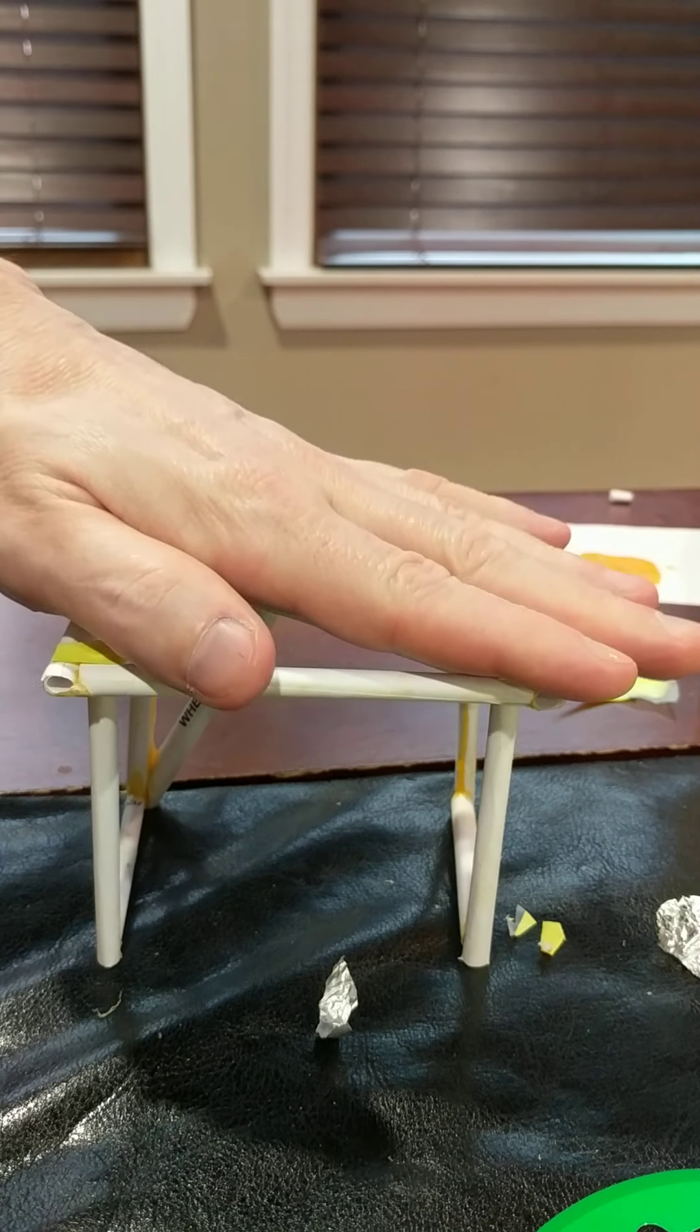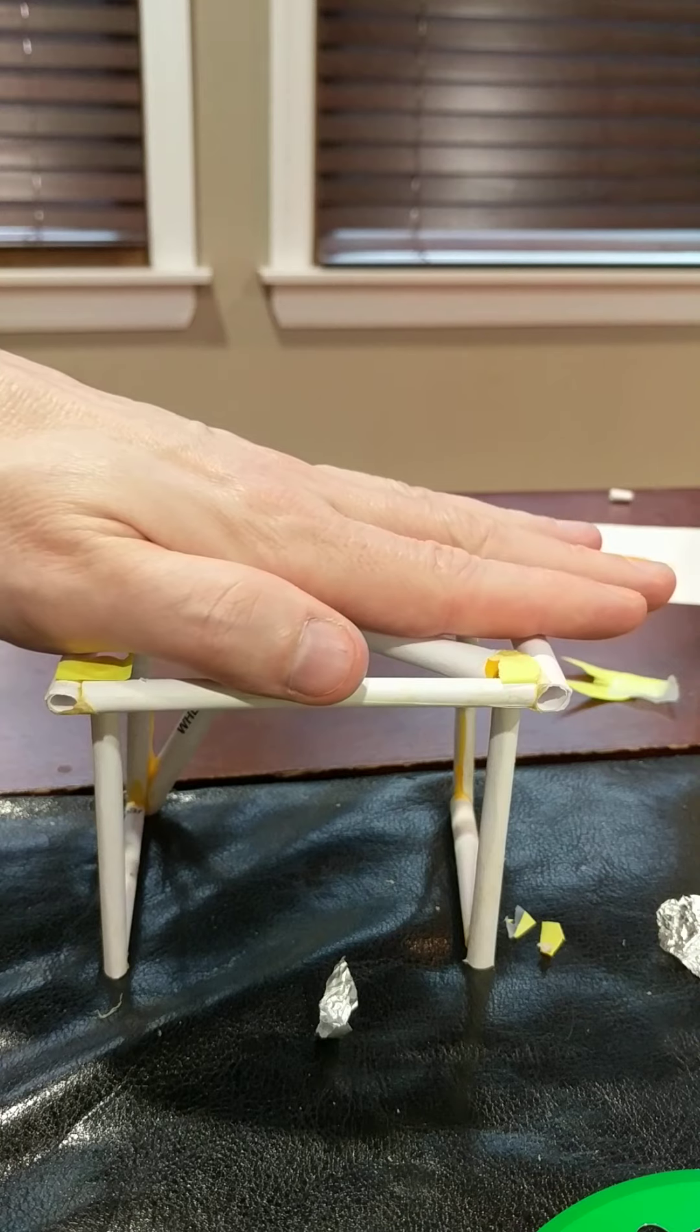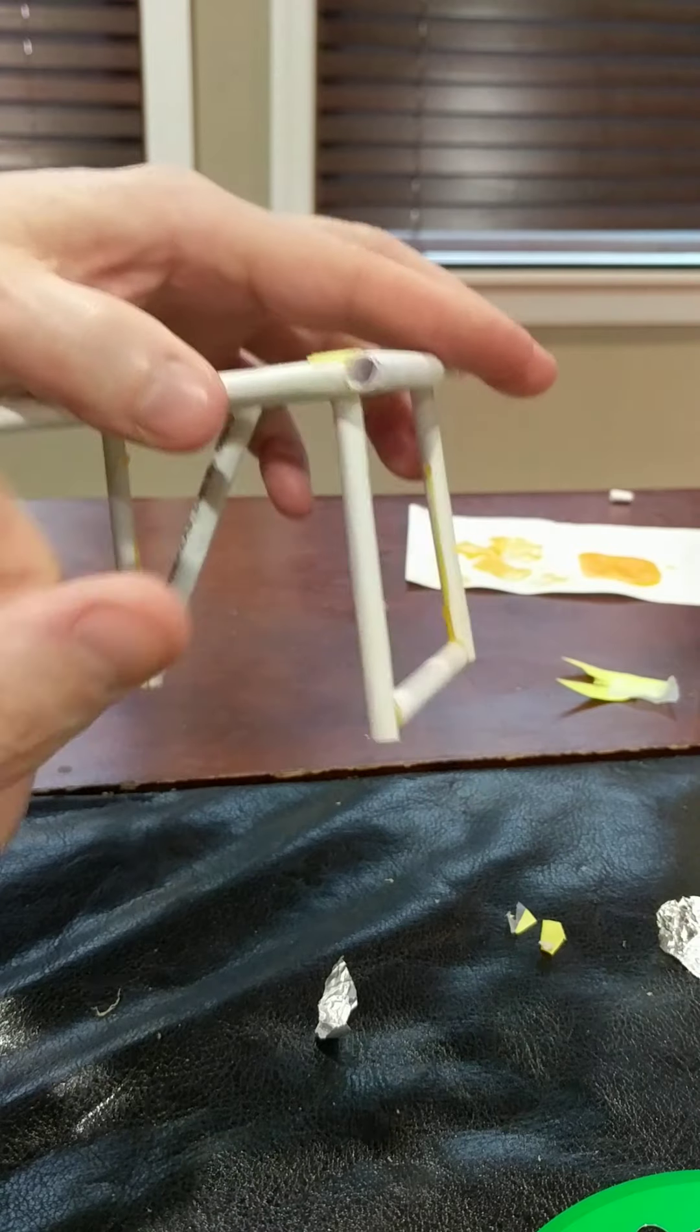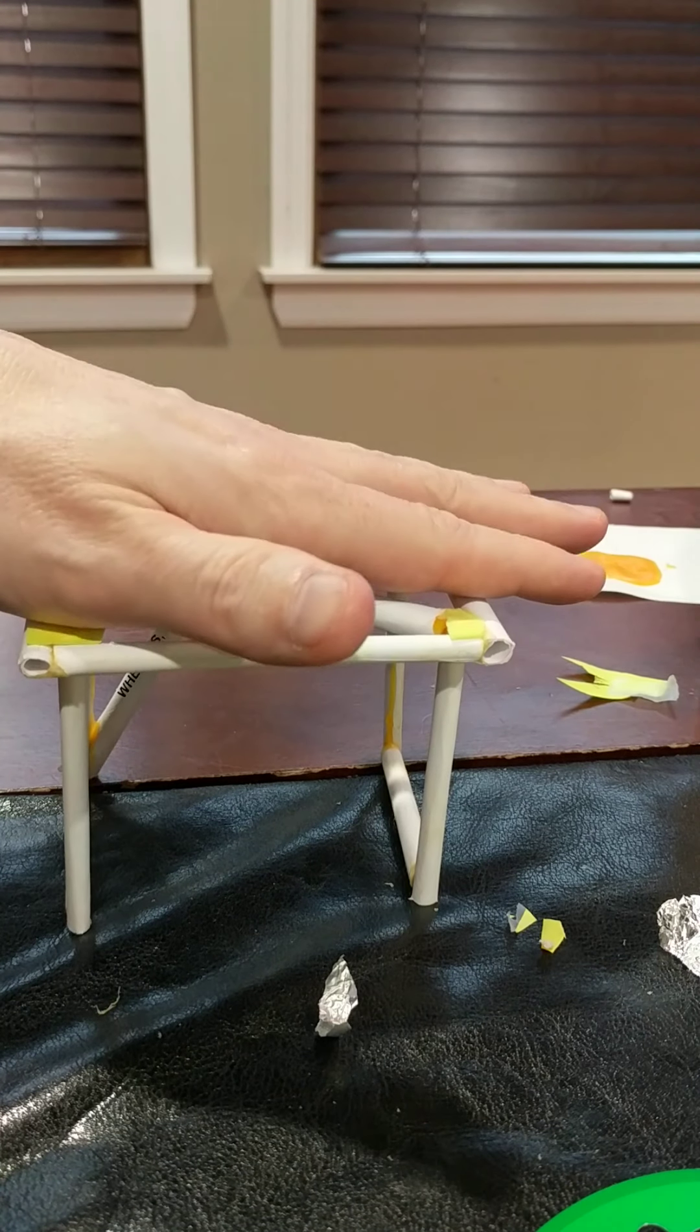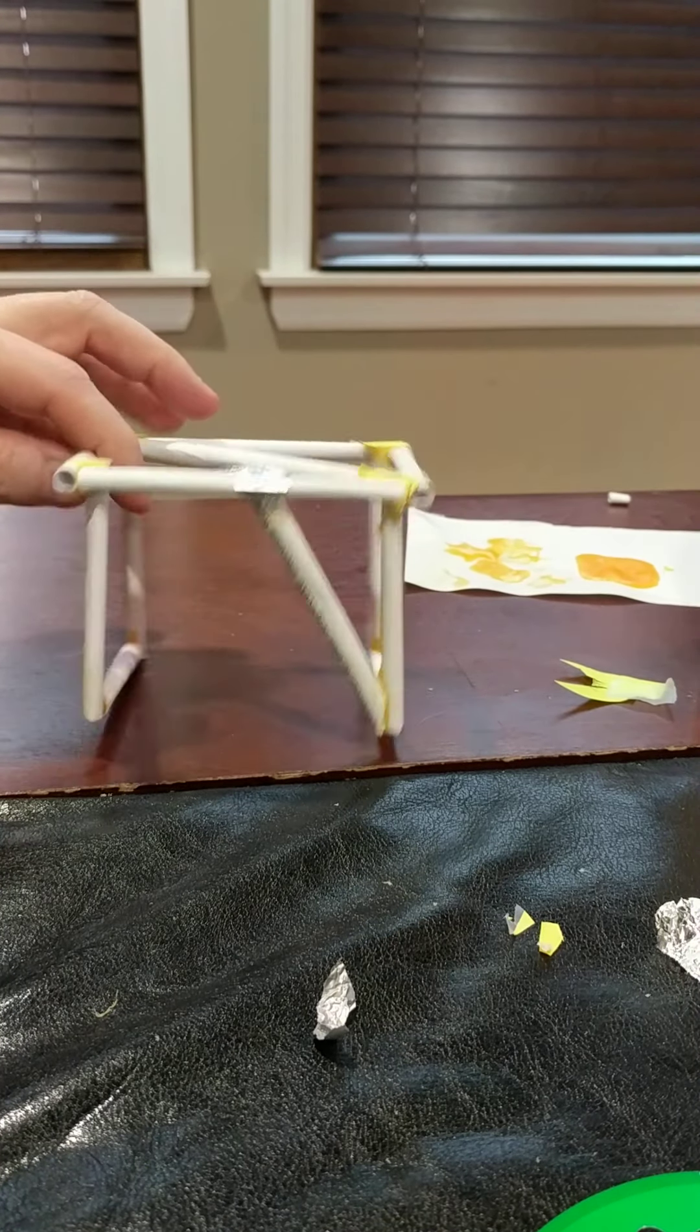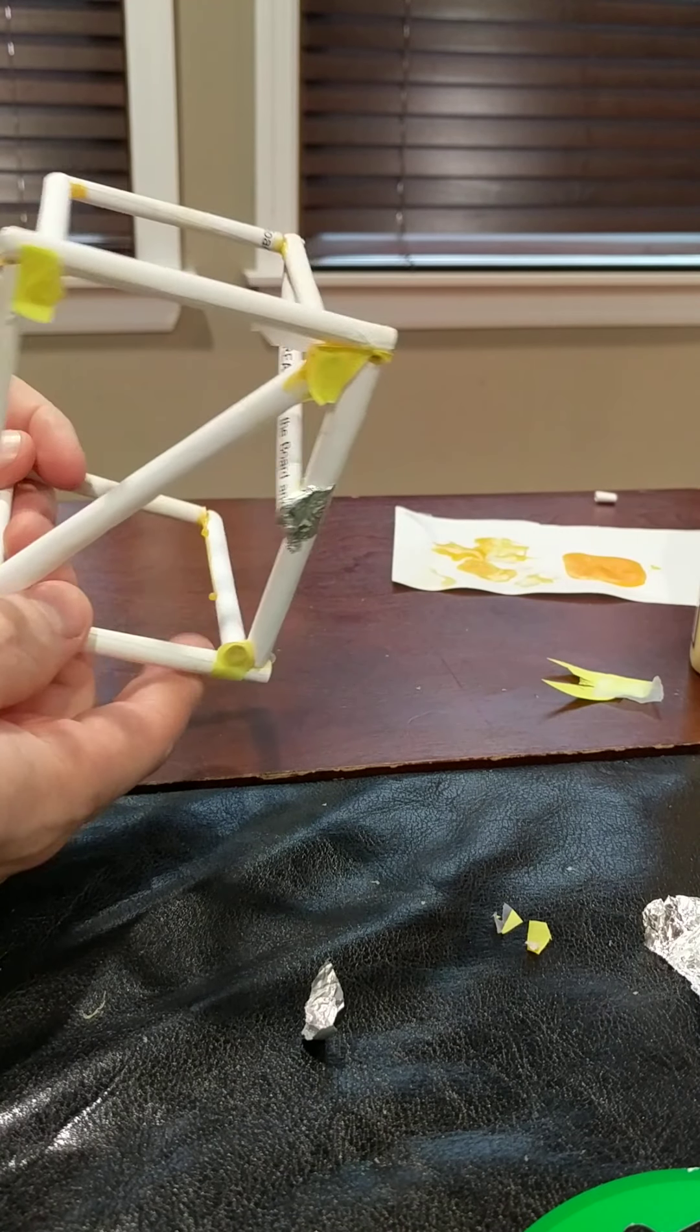And as soon as one joint breaks, it's like a domino effect. The rest break and then the whole structure fails. So by adding in some triangles, and we'll continue to do that in different areas, we're going to make this structure pretty rigid so it has more stability.